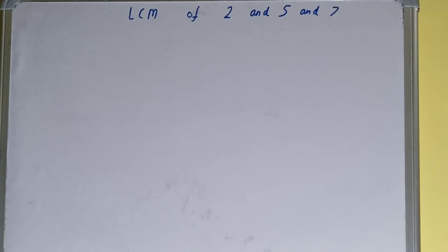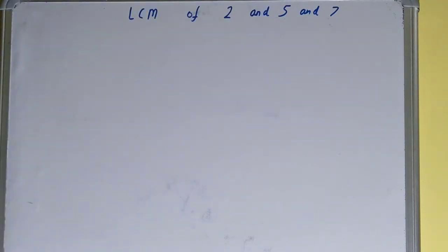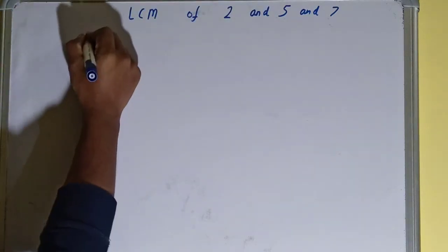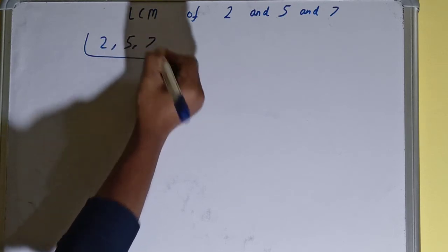Hello friends, in this video I'll be helping you with the LCM of the numbers 2, 5, and 7. So let's start. To find it out, first you need to write the numbers like this: 2, 5, 7.